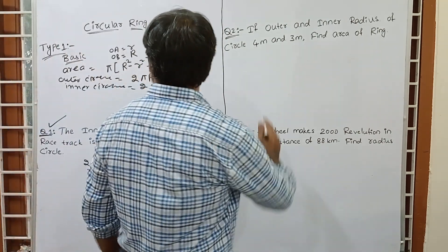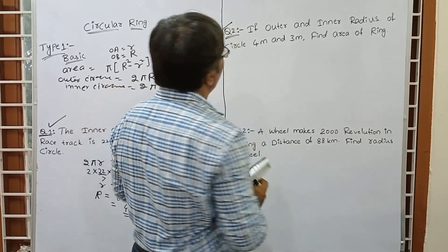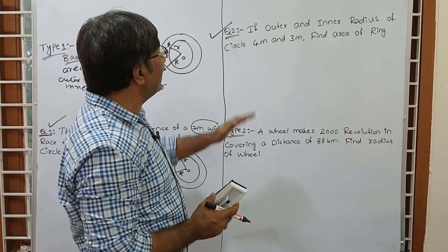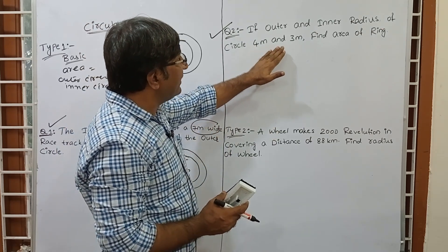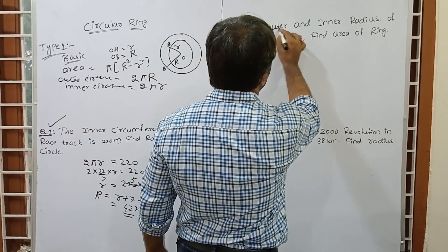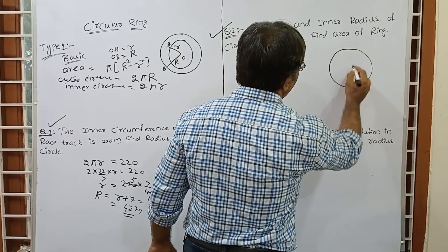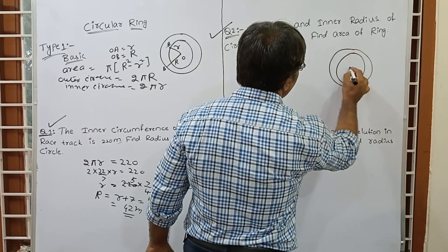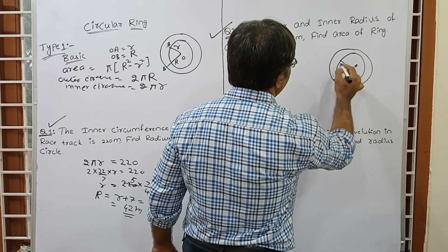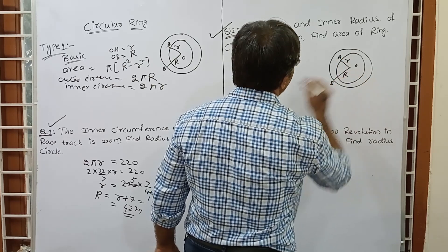Now see question number 2, which is the basic formula question. If outer and inner radius of a circle are 4 metres and 3 metres, then find the area of the ring. Again draw the figure: two circles with centre O, inner radius r equals 3 and outer radius R equals 4.